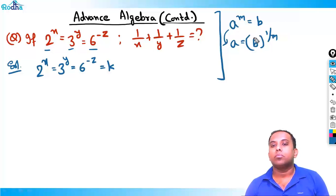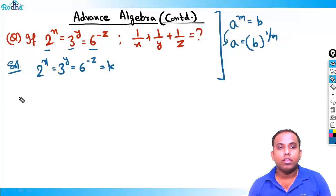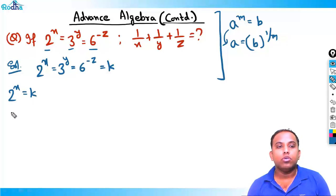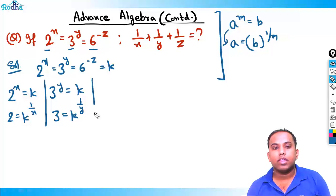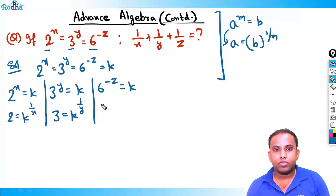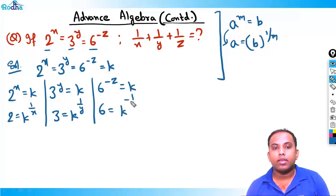Applying this rule: since 2^x = k, we get 2 = k^(1/x). Since 3^y = k, we get 3 = k^(1/y). Since 6^(-z) = k, we get 6 = k^(-1/z).